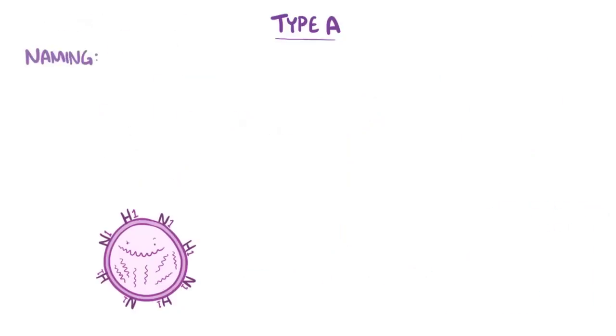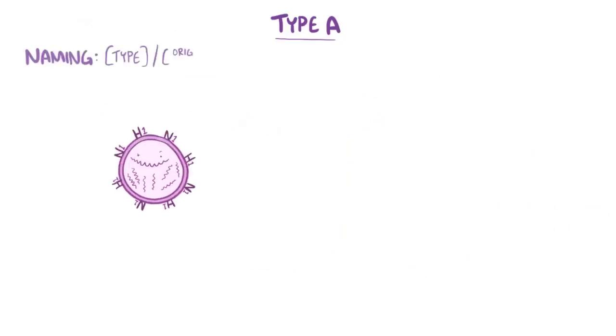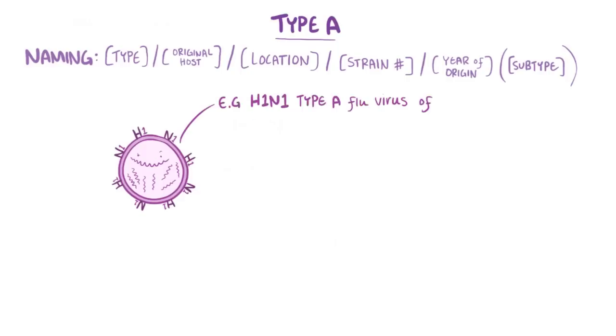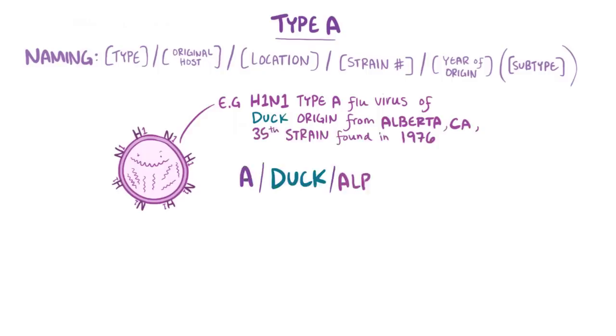To give the full name of a virus, we use the type, the original host that it came from, the location where the virus was first identified, which is usually a city, the strain number, the year of origin, and for type A influenza, the subtype named by the H and N glycoproteins. For example, an H1N1 type A flu virus of duck origin from the province of Alberta, Canada, that is the 35th strain discovered in 1976, would be called A, duck, Alberta, 3576, H1N1.